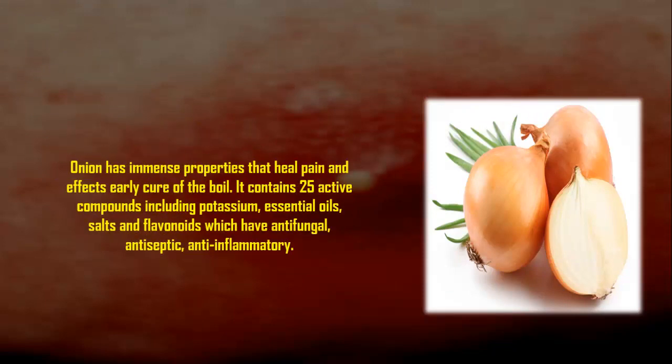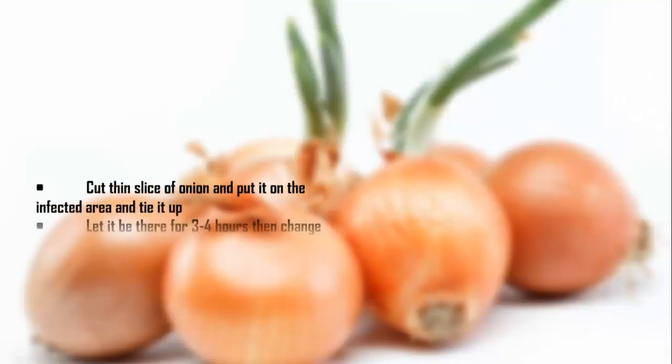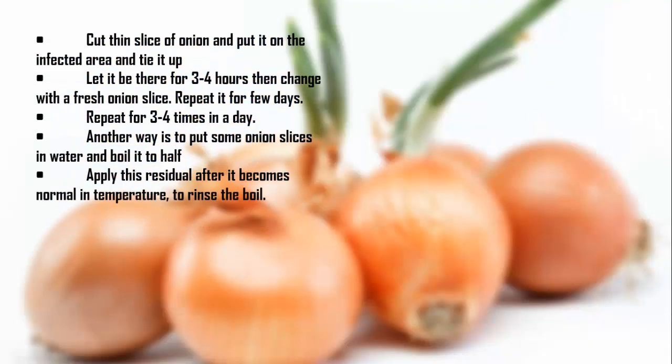Onions have immense properties that heal pain and effects early cure of the boil. Onion contains 25 active compounds including potassium, essential oils, salts, and flavonoids which have antifungal, antiseptic, and anti-inflammatory properties. Cut a thin slice of onion and put it on the infected area and tie it up. Let it be there for three to four hours, then change with a fresh onion slice.